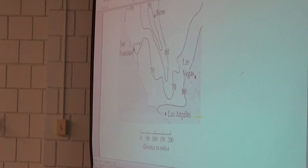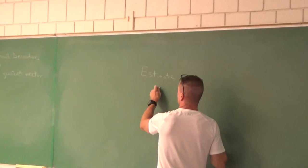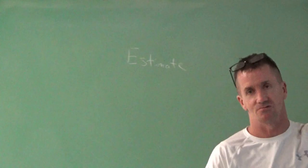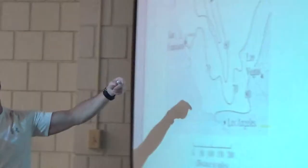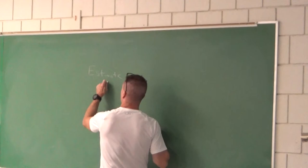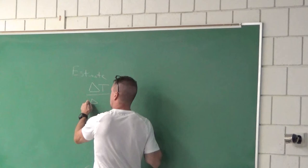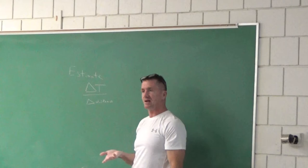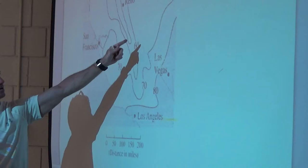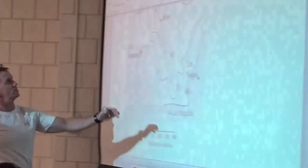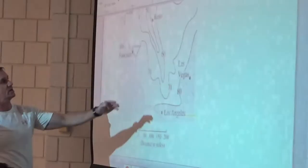If we want to estimate the directional derivative — remember we're just estimating — the best we can do for contours is change in the function, which here is temperature, over the change in the distance. That's all we can do in terms of estimating the directional derivative. So let's find the change in temperatures and estimate the distance between them.